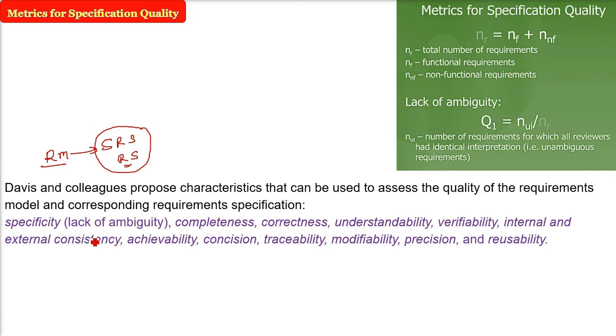Specificity, lack of ambiguity, whether it is complete or not, correctness, understandability, verifiability, internal and external consistency of the document, achievability, whether we can achieve these requirements or not, concision, traceability, and modifiability.